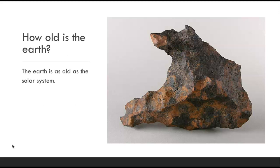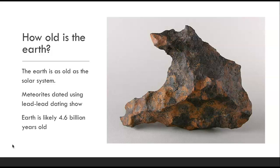How old is the Earth? Well, the Earth is as old as the solar system. Meteorites were able to be dated using lead-lead dating, and it showed that the Earth is likely 4.5 to 4.6 billion years old. That amount of time is nearly immeasurable — at least in terms of our minds. We have a very hard time understanding millions versus billions versus thousands versus hundreds. Just look up a million versus a billion and you'll find really good pictures showing just how large that difference is.